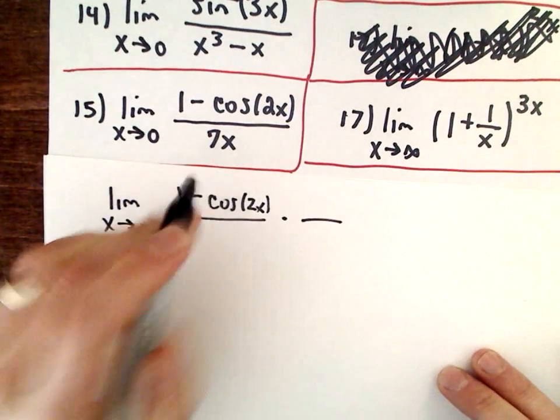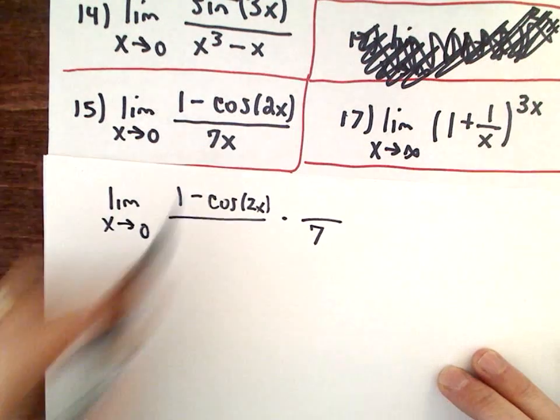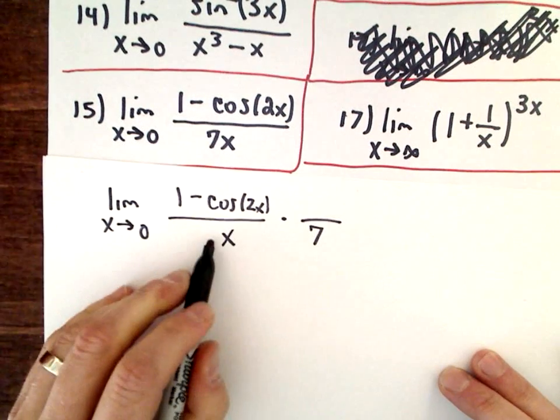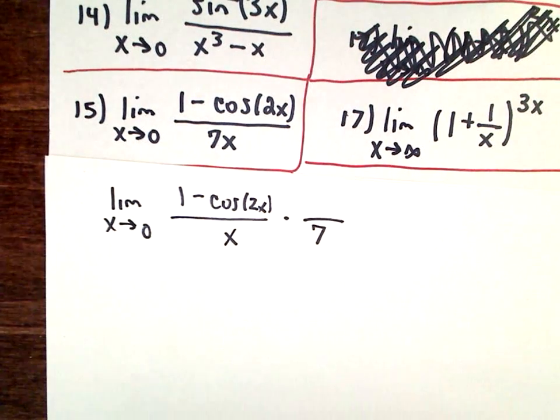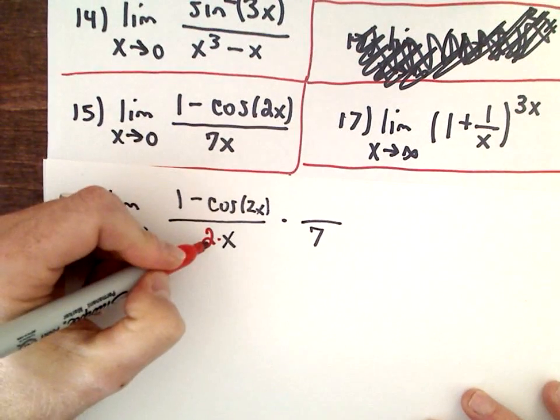I don't want the 7 underneath there, so there's the 7. I'm going to move it over. I do want the x underneath there, so there's my x. Well, I've got 2x here. What do I want down there? I want 2, so I'm going to multiply by a 2 here. But since I do it in the denominator, I've got to do it in the numerator as well.